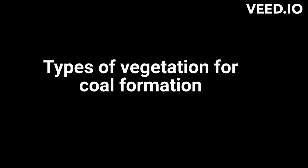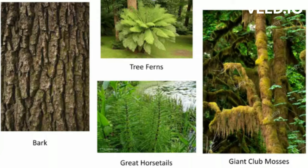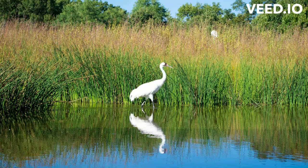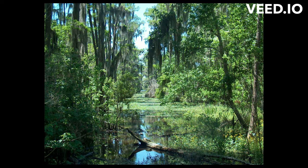Barks, tree ferns, great horsetails, and giant club mosses are all vegetation through which coal can form. Two major environments for coal formation include marsh and swamp environments. A marsh environment is a wetland characterized by mineral soils which are poorly drained, and plant life composed mainly of grasses, constantly flooded with water from a specific source. A swamp environment, on the other hand, is characterized by the abundance of trees and is defined as a wetland with waterlogged soils interspersed with areas of dry land.